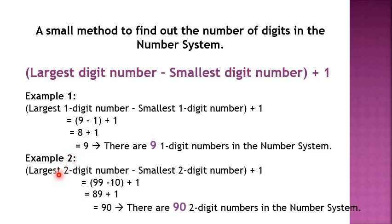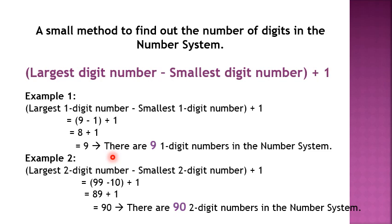Example 2: we subtract the smallest two-digit number from the largest two-digit number and add 1 to the difference. The largest two-digit number is 99 and the smallest is 10. After subtracting 10 from 99 we get 89. Adding 1 to 89 gives us 90. That means there are ninety two-digit numbers. Similarly, children, we can find out how many three-digit numbers, four-digit numbers, five-digit numbers, six-digit numbers, and so on there are.